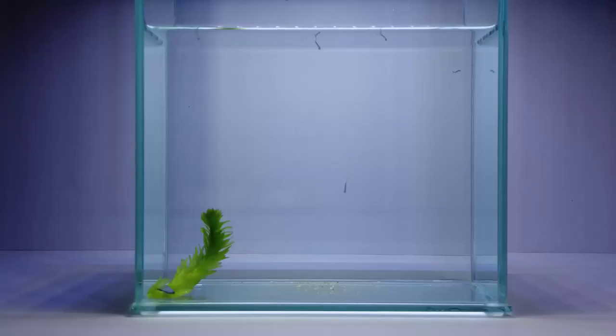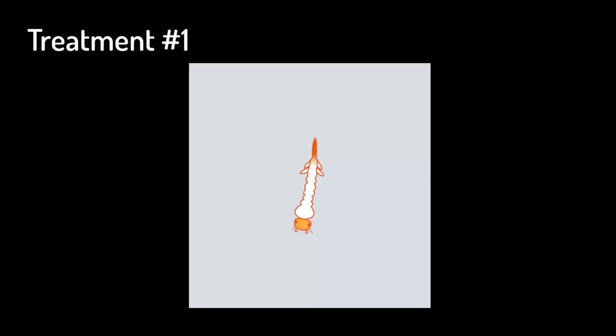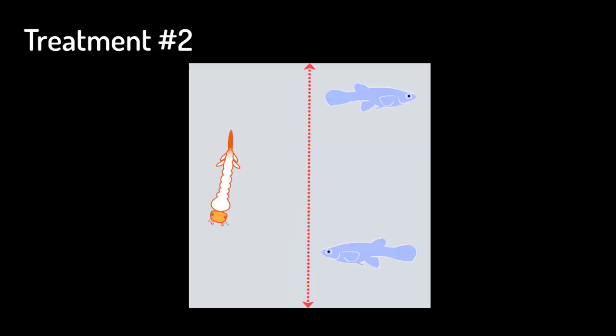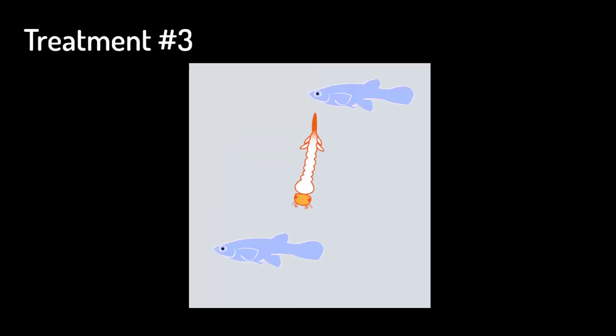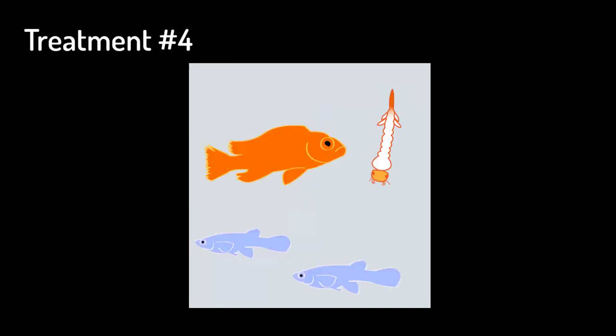You'll be watching mosquito larvae in four experimental treatments. Each tank will contain five mosquito larvae. Treatment 1: Gambusia absent — the mosquitoes are alone in this treatment. Treatment 2: Gambusia present behind a glass partition. Treatment 3: Gambusia present, no partition. Treatment 4: Cichlid and Gambusia present, no partition.